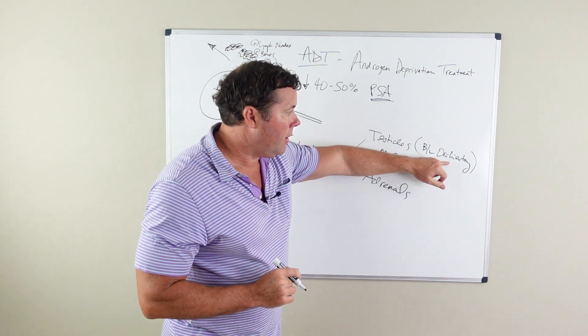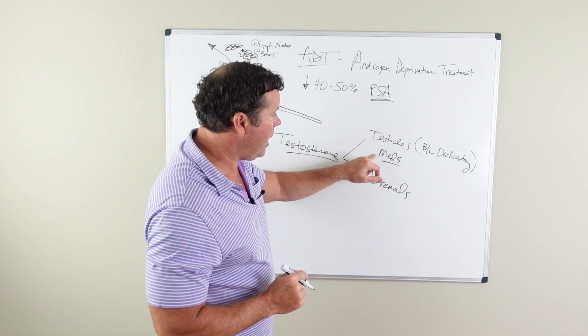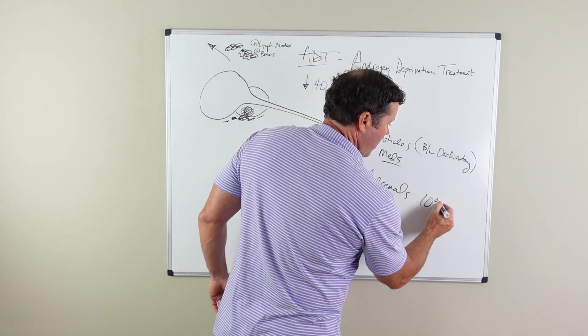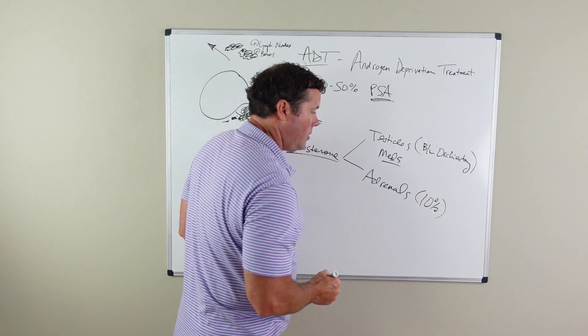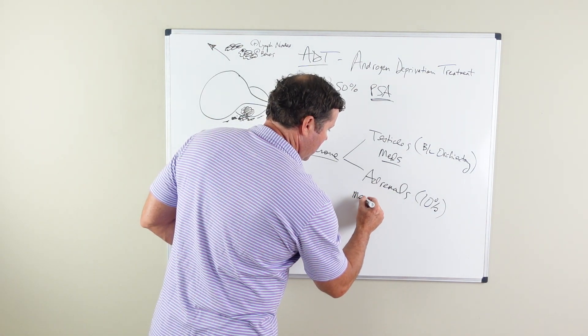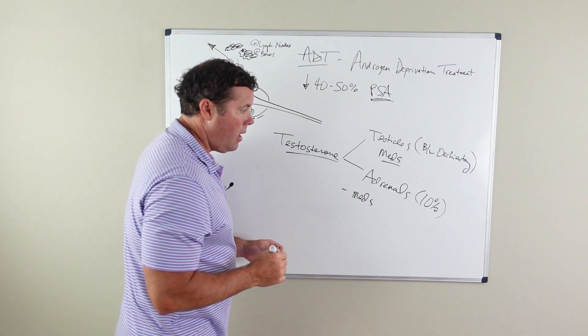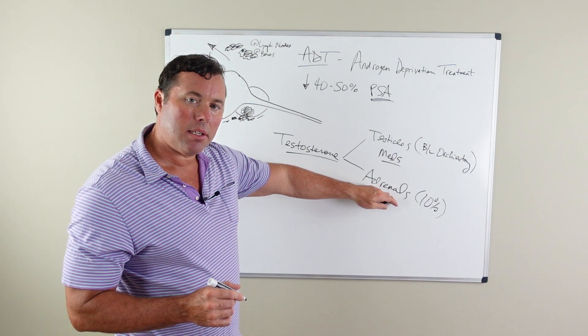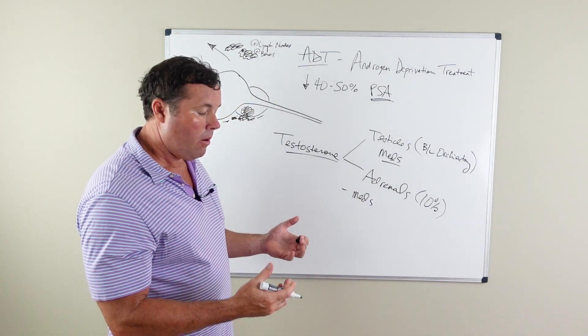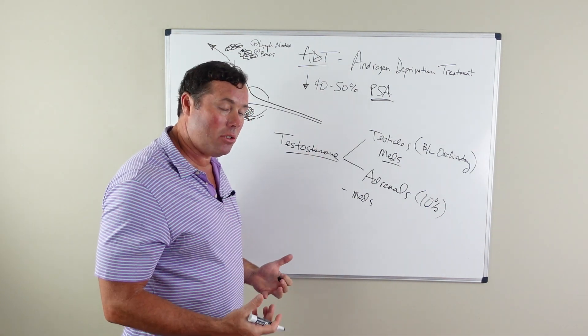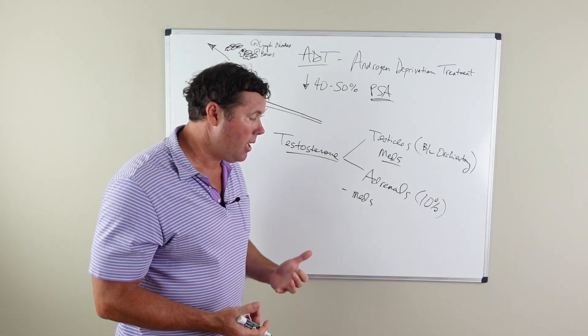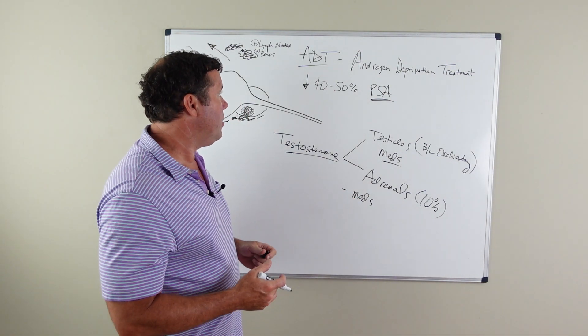So removal of testicles or medications. Ten percent of the production of testosterone comes from the adrenal glands, so there are also medications that are directed towards the adrenal production of testosterone. They're called antiandrogens and they're used to block this remaining 10% of testosterone production.